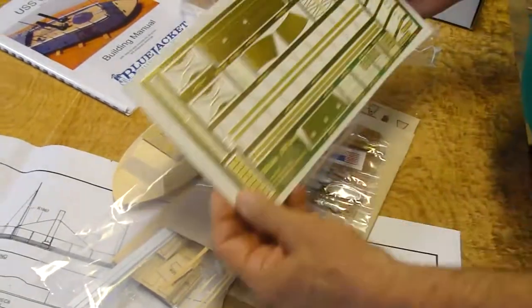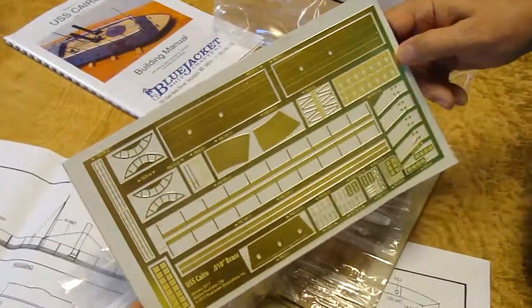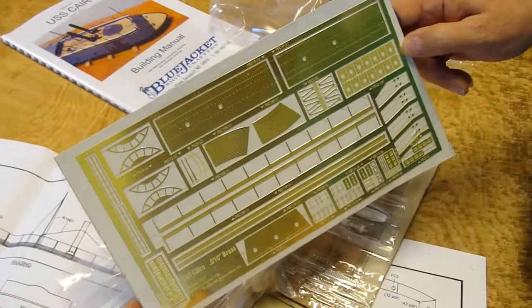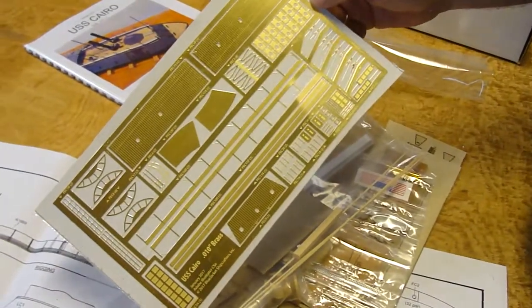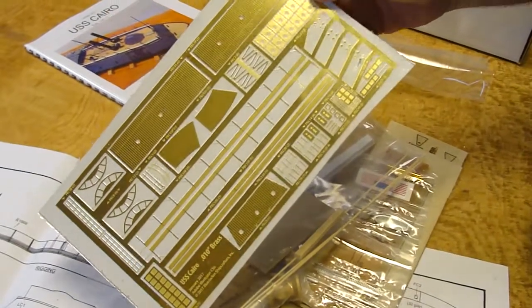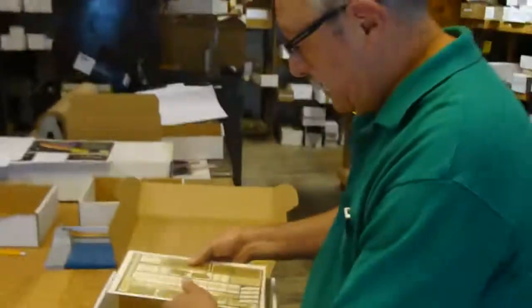And there is an absolutely gorgeous set of photo etched brass. And that's the kit of the Cairo. I hope you'll like this video and subscribe on YouTube. Thank you for watching.